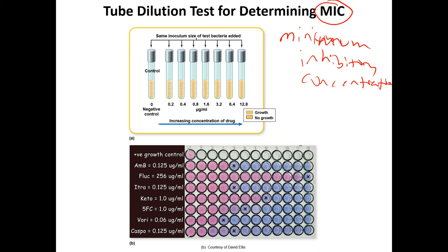Your control broth has no antibiotics, so you'd expect the bacteria to grow. As you increase the concentration of the drug, the turbidity of the broth decreases. You see a range where the drug is starting to kill off bacteria — lower turbidity, and then no turbidity from 3.2 to 6.4 micrograms per mL — where you see growth and no growth. Somewhere in this range you have the minimum inhibitory concentration: the lowest concentration needed to inhibit or kill the bacteria, where you have no microbial growth.